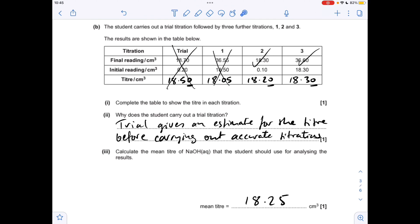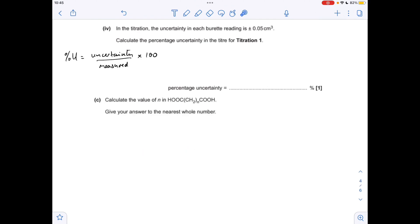Percentage uncertainty calculation. There's the formula we use: percentage uncertainty is the uncertainty of the apparatus divided by what's been measured, multiplied by 100. The important thing to remember here is a titre is based on two readings of the burette, so we need to double the uncertainty, which gives an answer of 0.55% for titre one.